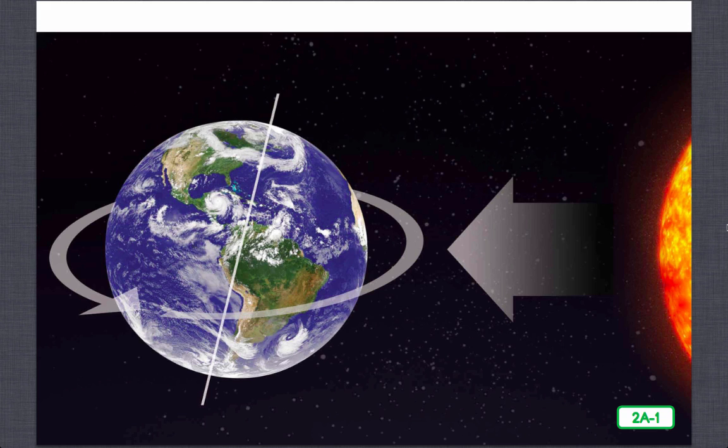So the Earth moves in two ways. The first way, rotation, causes daytime and nighttime. So the sun does not move during the cycle of daytime and nighttime. Instead, the Earth is rotating or spinning.